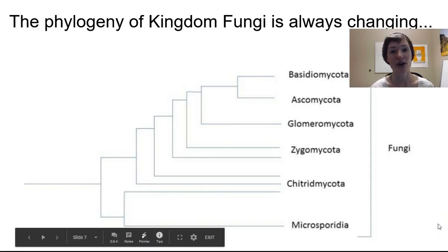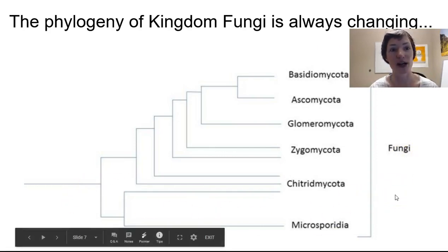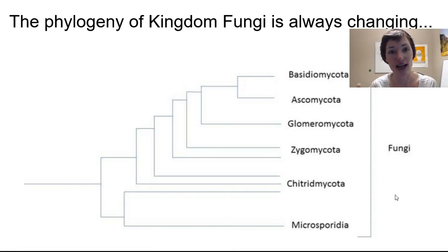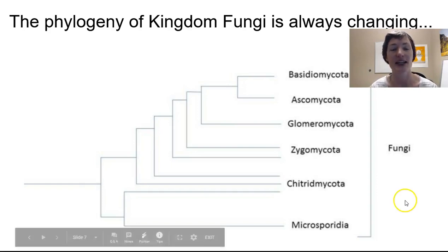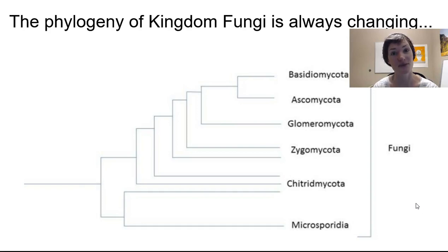This is video 2 for our microfungi lecture. The phylogeny of kingdom fungi is always changing. Here is a phylogenetic tree — a branching tree diagram that illustrates a hypothesis for how these organisms are related. That's what a phylogeny is: the evolutionary history of organisms. It's always a hypothesis, so it's always changing when there's new evidence. Fungi have been poorly studied for a very long time, so the fungal phylogeny is changing maybe more rapidly than in other groups.